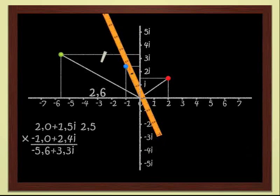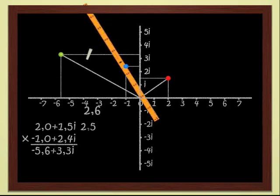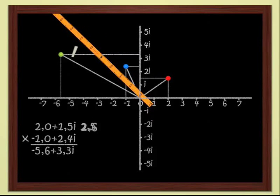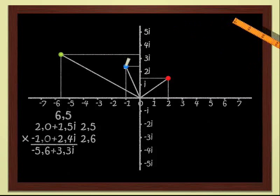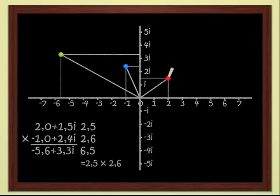For the blue point, I get 2.6. And for the green point, which is the product of the two points, I have 6.5. As a rule, the modulus of a product of two complex numbers is just the product of the moduli of the two numbers.